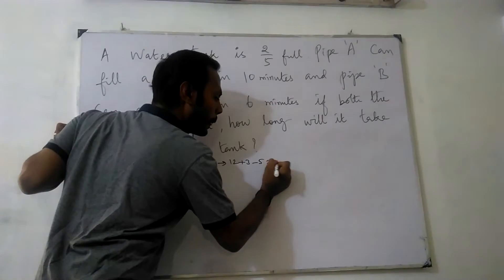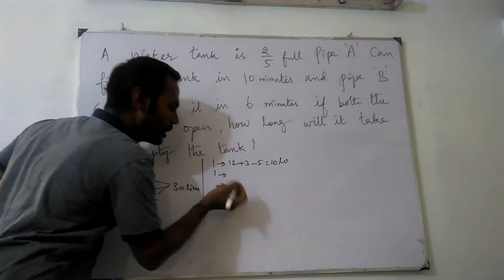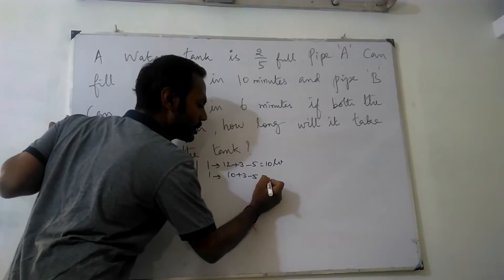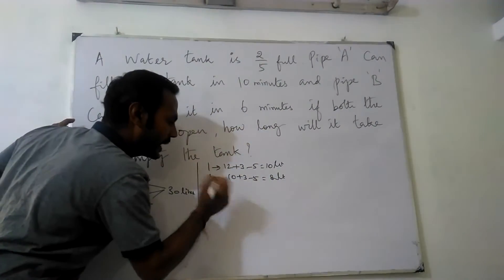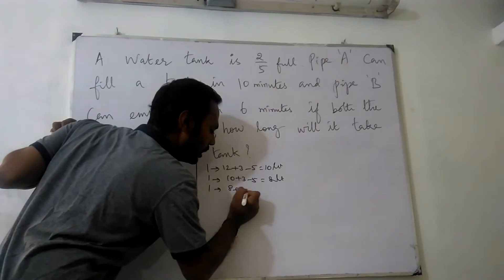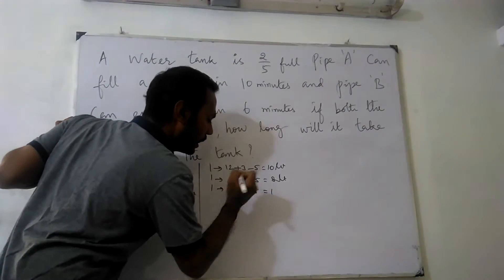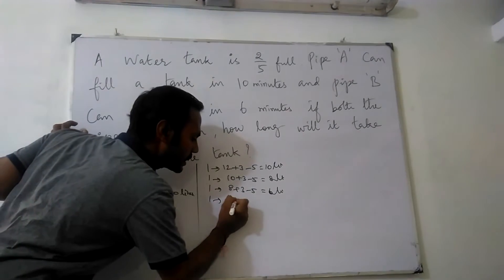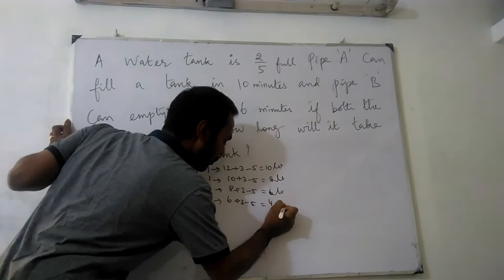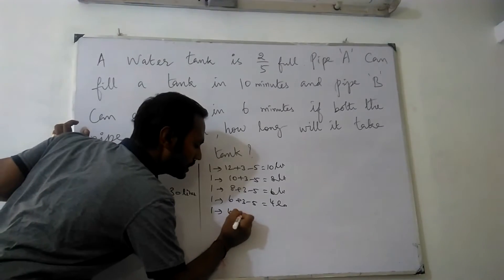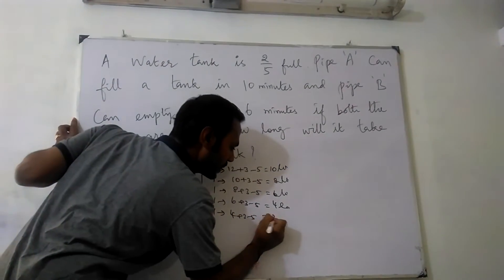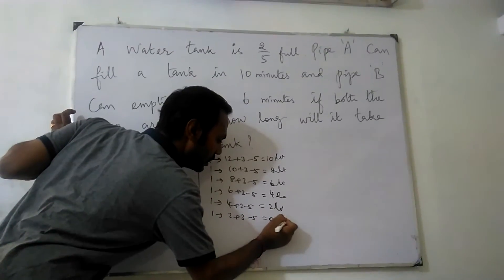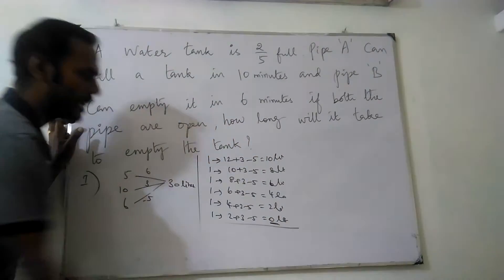Starting with 12 liters: after minute 1, 12 + 3 - 5 = 10 liters. After minute 2, 10 + 3 - 5 = 8 liters. After minute 3, 8 + 3 - 5 = 6 liters. After minute 4, 6 + 3 - 5 = 4 liters. After minute 5, 4 + 3 - 5 = 2 liters. After minute 6, 2 + 3 - 5 = 0 liters. Zero liters means the tank is empty.